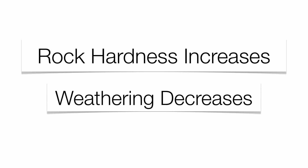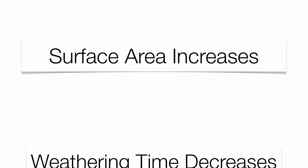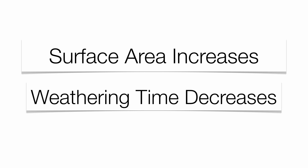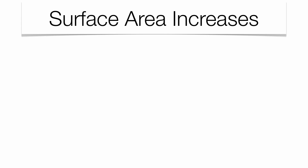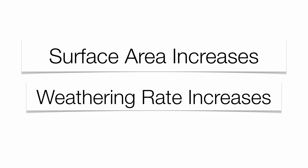There are a couple of relationships you need to know. First, as rock hardness increases, weathering decreases — less weathering takes place with a more resistant rock. Second, as surface area increases, weathering time goes down, meaning the more surface area you have, the quicker the rock will wear away and break apart. So the weathering rate has a direct relationship with surface area, while weathering time has an indirect relationship.